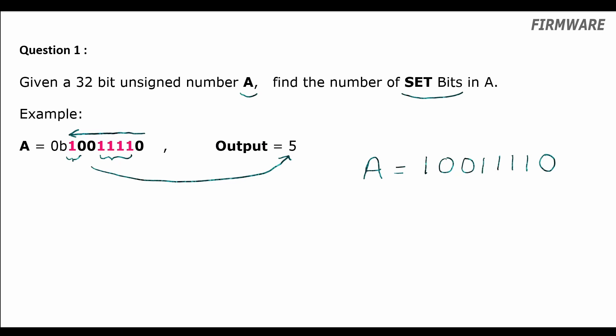So if you have a number A and you want to unset its rightmost 1, we can do A equal to A AND (A minus 1).